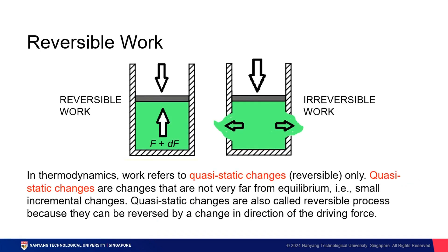Here I want to introduce the concept of a quasi-static change. A quasi-static change is essentially reversible work. In this course, we assume that our changes are mostly quasi-static. For example, consider a piston pushing down onto a volume of water in a beaker. Quasi-static changes are very small incremental changes which eventually lead the piston back to exactly where it started — they are reversible processes because they can be reversed by a change in direction of the driving force. However, it's important to note that in the real world, there are very few changes that are actually truly quasi-static. Non-quasi-static changes, or irreversible work, would be represented by a scenario where so much force is applied to a liquid that it causes a rupture to the vessel.